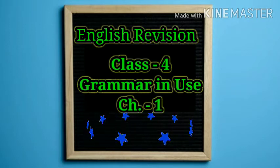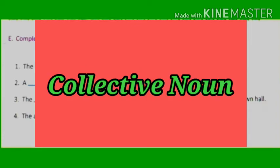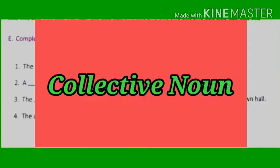Hello children, this is English revision and today we will do some exercises from the grammar section. A collective noun is the name for a group of people, animals or things, and such a noun is spoken of as one whole or a unit. For example: bunch, herd, team, school, class, etc.